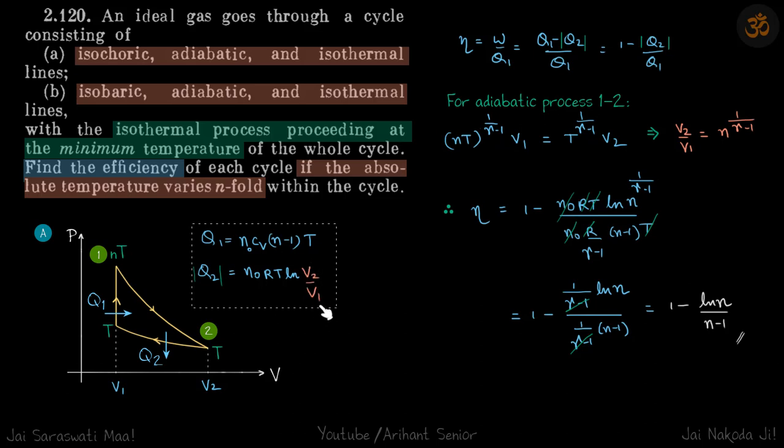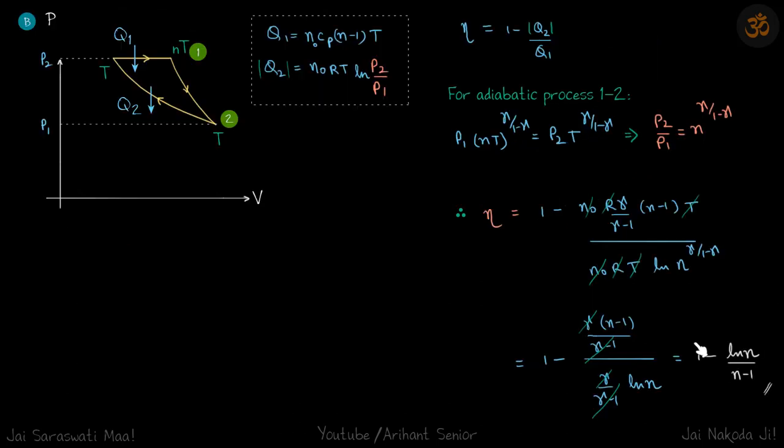So now that we have the ratio of V2 by V1, we will just put the values 1 minus Q2 by Q1 and get our answer for part B.